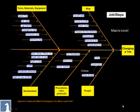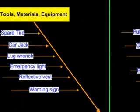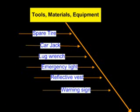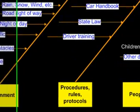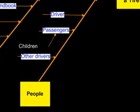By using the cause and effect diagram at a macro level and the use of the five ribs as outlined here, you can step back away from the job of changing a tire and begin to see the interrelationships between the steps required, the tools, materials, and equipment required — so that you can identify that everything is there — the environment, the procedures, rules and protocols, and people. How do these all interact, and do they all work together effectively?